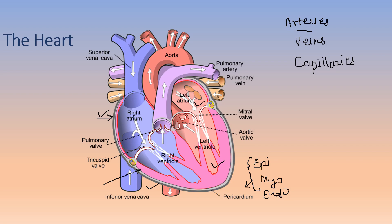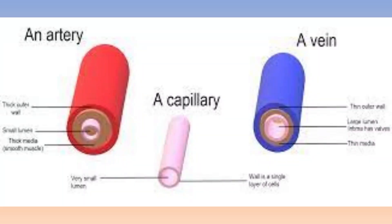The thicker walls of arteries can bear the pressure of blood supply. The aorta is an artery that carries oxygenated blood towards the body with a thicker wall. Veins carry deoxygenated blood towards the heart; they have a wide lumen and thinner walls because the blood pressure in the veins is quite low.